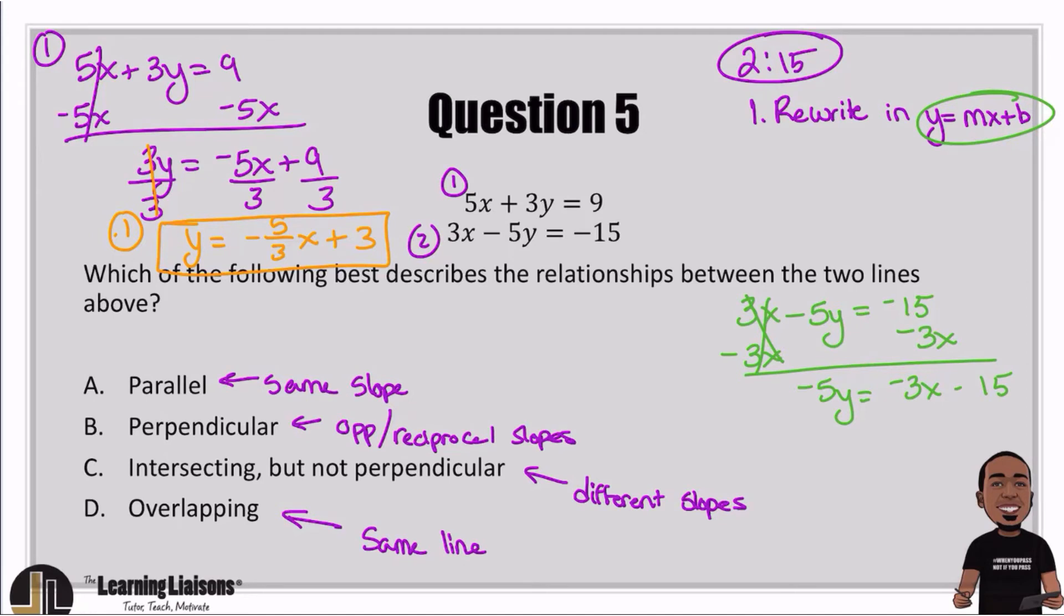From here, I'll end this by dividing both sides by negative 5 so I can get that y by itself. Giving me y equals negative 3 divided by negative 5 is 3 over 5 positive. Keep the x, and then negative 15 divided by negative 5 would be positive 3. And there it is. Boom. There's my results.